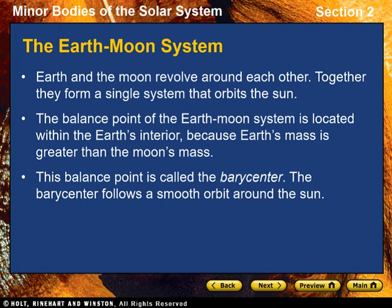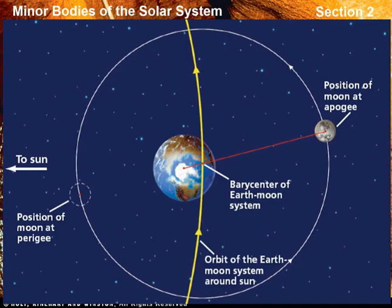The Earth-Moon system. To observers on Earth, the moon appears to orbit Earth. However, if you could observe Earth and the moon from space, you would see that Earth and the moon revolve around each other. Together, they form a single system that orbits the sun. The mass of the moon is only one-eightieth that of Earth, so the balance point of the Earth-Moon system is not halfway between the centers of the two bodies. The balance point is located within Earth's interior because Earth's mass is greater than the moon's mass. This balance point is called the barycenter.